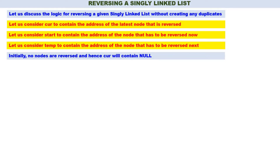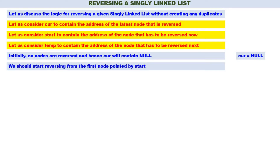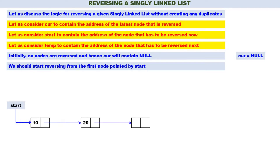Initially, no nodes are reversed, and hence curr will contain null. We should start reversing from the first node pointed by start. This is our linked list — five nodes: 10, 20, 30, 40, 50. Start is containing the address of the first node, 10. No nodes are reversed, therefore curr is equal to null. The first node that we have to reverse is 10, therefore start is containing the address of node 10.